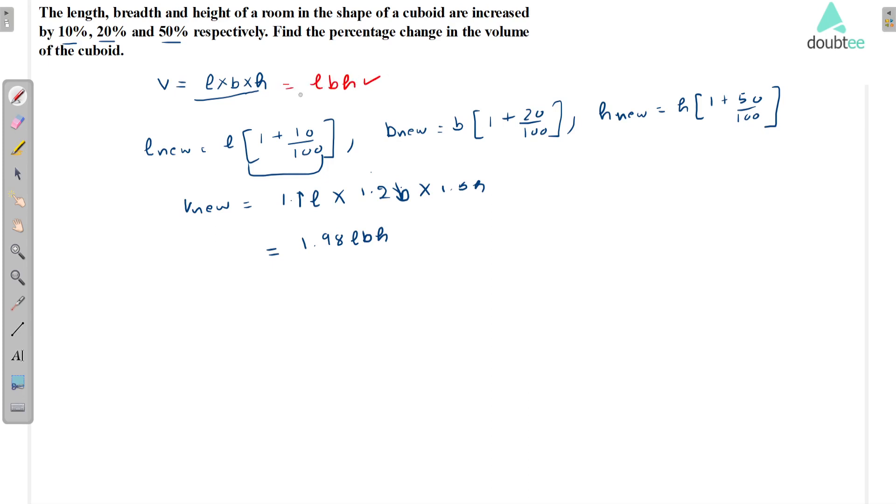Initially we have the volume of the cuboid, now we have the new volume. Now we have to find the percentage change. Percentage change is (1.98 lbh minus lbh) divided by lbh.